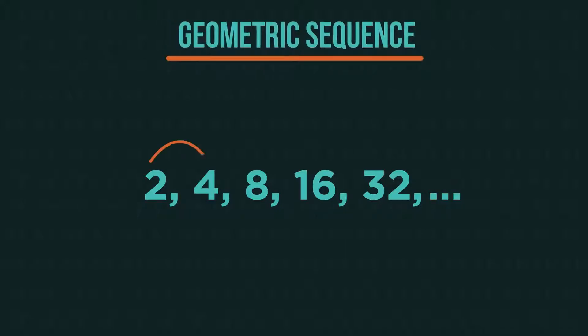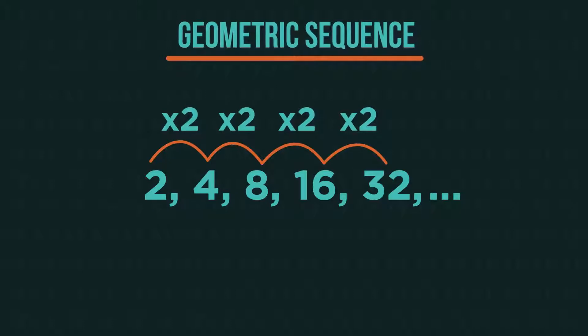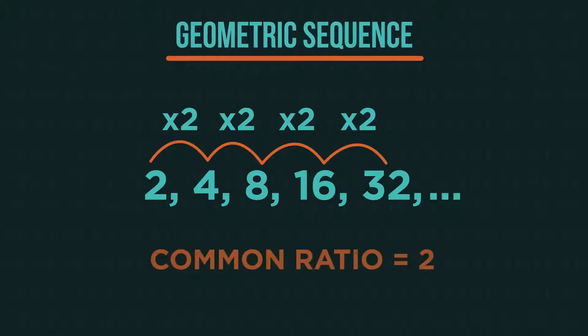This is called a geometric sequence. We multiply by the same value each time. We call it a common ratio.